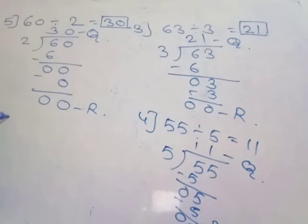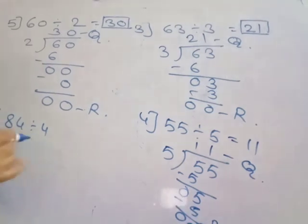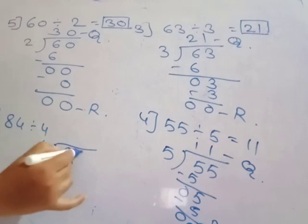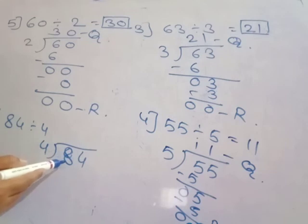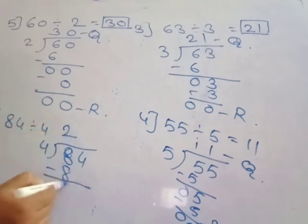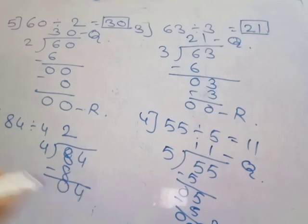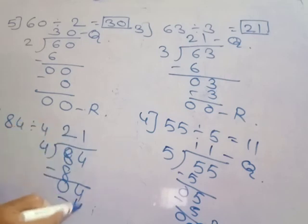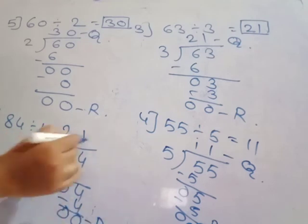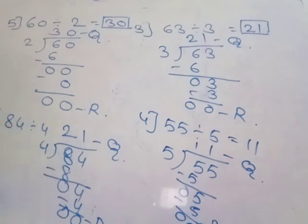Next example: 84 divided by 4. This 4-digit — this number 84 is divided by 4. Firstly divide the ten's place number 8: 4 ones are 4, 4 twos are 8. Write 2 here, remainder zero. Then take the unit's place number 4. Divide: 4 ones are 4, remainder zero. The quotient is 21. So 84 divided by 4 is equal to 21.